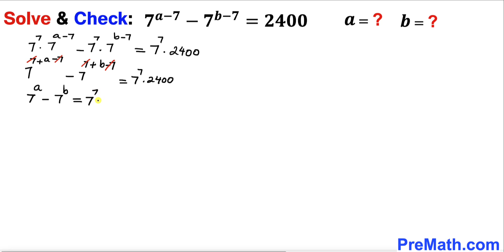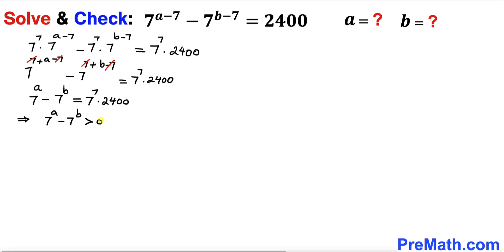So we have 7 power a minus 7 power b equals 7 power 7 times 2400. Now 7 power 7 times 2400 is a number greater than zero, which means it is positive. Therefore we conclude that 7 power a is greater than 7 power b, which means a is greater than b.